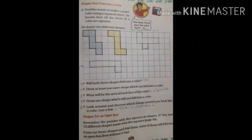Page number 127: Steps that fold into a cube. Buddha wants to make a paper cube using a square sheet, which means all four sides will be equal. He knows that all the faces of a cube are squares. The face means the portion in front of you. How many faces does the cube have? Six - one in front, back, top, bottom, and the two sides.